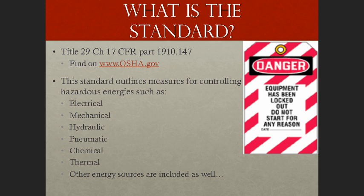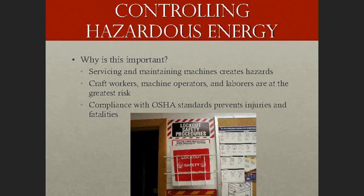For example, a particular system may include both electrical and mechanical requirements for Lockout Tagout. Controlling hazardous energy is important for three primary reasons. First, servicing and maintaining machines creates a lot of hazards — for example, a machine may need to be lubricated according to manufacturer specifications, and we need to verify it has been properly locked out and tagged out to do so. Craft workers, machine operators, and laborers are at the greatest risk, and compliance with OSHA Lockout Tagout standards truly does prevent injuries and fatalities.